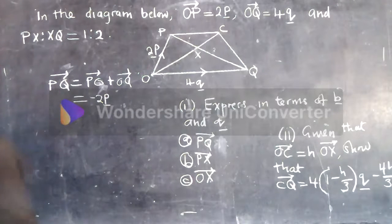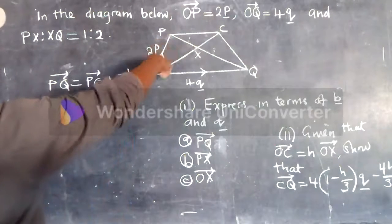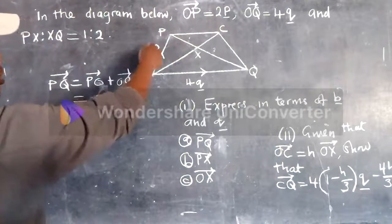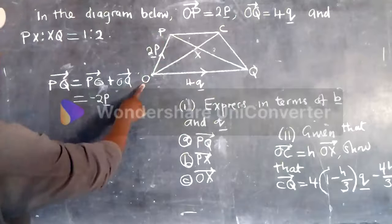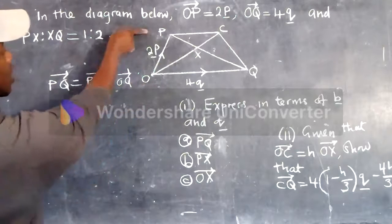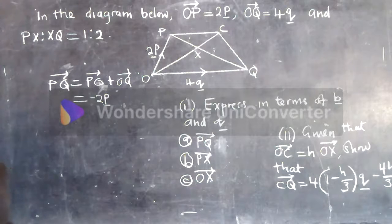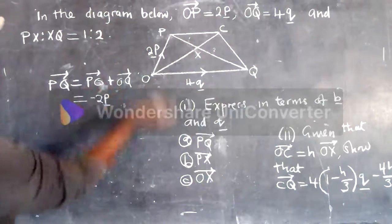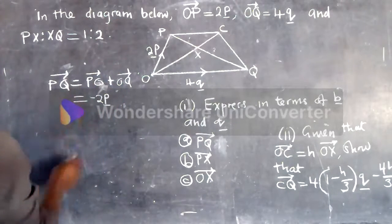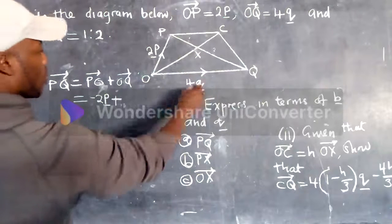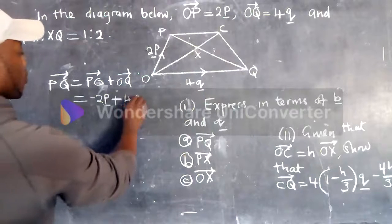Why do I put a negative here? It's because it's moving the opposite direction. The arrow is pointing upwards and it's moving from p to o is the opposite direction. o, p is the direction in which the vector is moving. But p, o is the reverse. So opposite direction, we put a negative plus. This one, o, q is what? It's 4q.